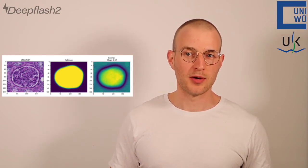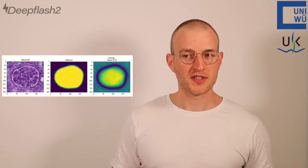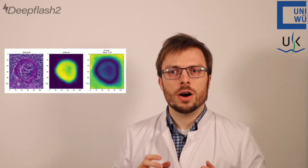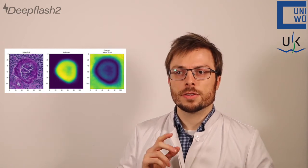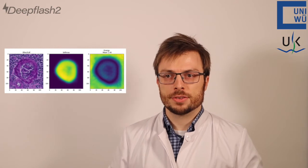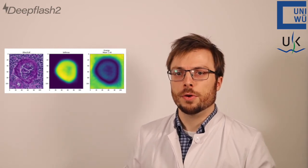Well, that was easy. But what about a difficult case with ambiguous morphology? Here is an example of just that. We see a glomerulus with thickened capsule and lymphocytic infiltration. Our model now needs to decide whether this is indeed a glomerulus or rather irrelevant background. Using the softmax activation, the model predicts the glomerulus. However, the model's confidence is limited, as the negative energy of the prediction is very low with 1.4.